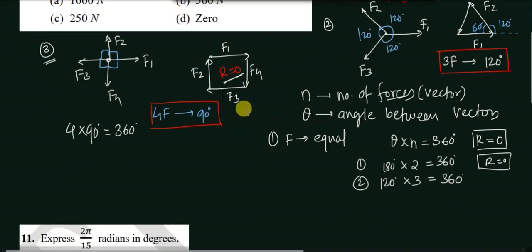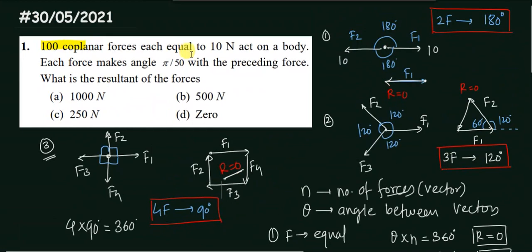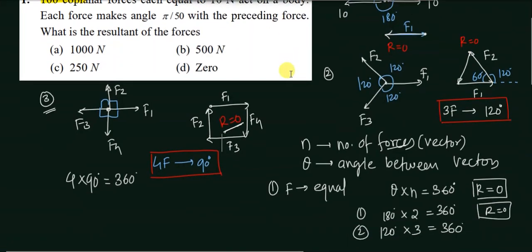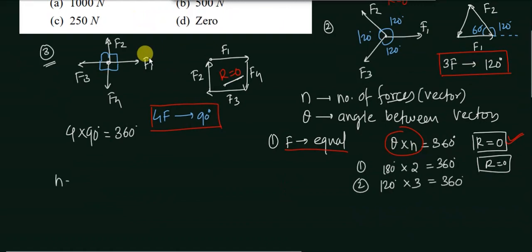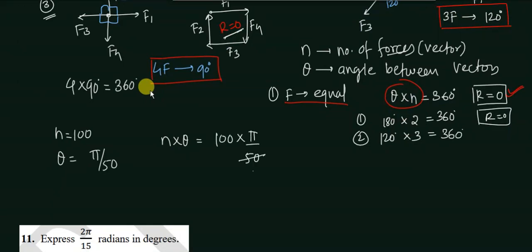Now applying this to the question: there are 100 coplanar forces each equal to 10 Newton — so magnitudes are equal. The angle between consecutive forces is π/50. Multiply n × θ: 100 × π/50 = 2π, and we know 2π equals 360 degrees. So the resultant of all 100 forces is zero.